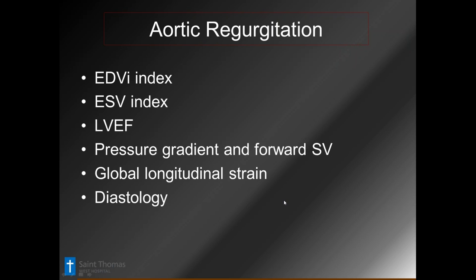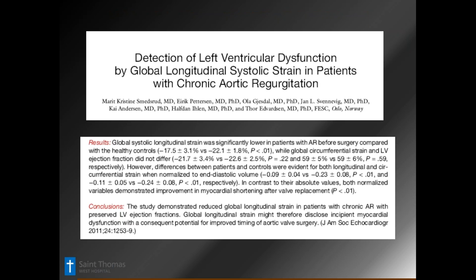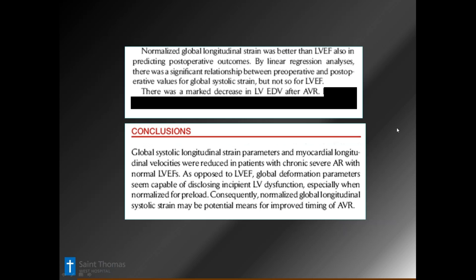There's a good reference article: results show that GLS was significantly lower in patients with AR before surgery compared to healthy controls, while global circumferential strain and ejection fraction did not differ. The difference between patients and controls was evident for global longitudinal strain — a very good number we can get from a 3D data set. The recommendation is to look at longitudinal volume loading and longitudinal strain in patients with AR, and to do it even at the mild level for good serial evaluation as they progress.